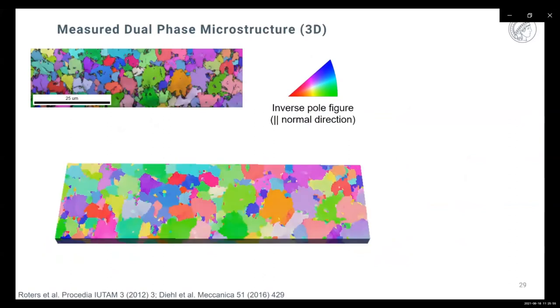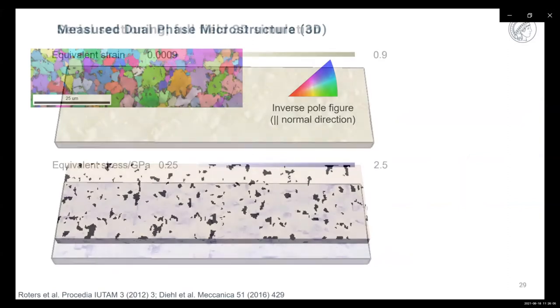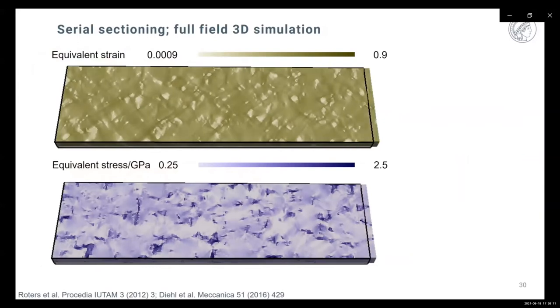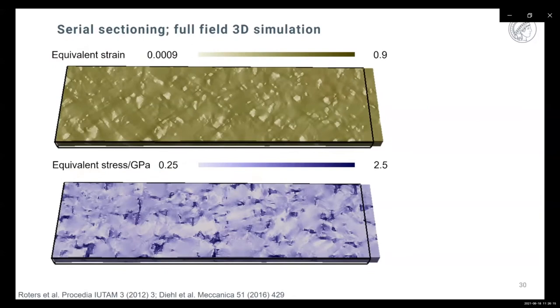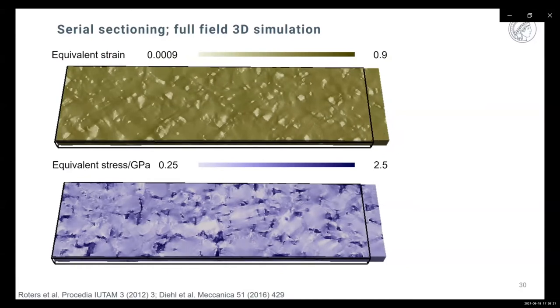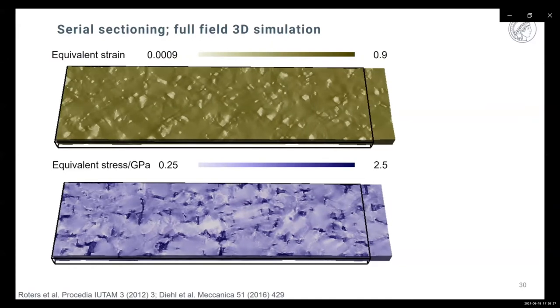A larger portion of material, mapped by EBSD, is rendered digitally and exposed to a computer tensile test using the spectral solver, yielding strain and stress distributions for larger portions of three-dimensional material. This becomes really interesting for predictions of mechanical response and damage initiation. Much of this work was from Martin Diehl, now professor at Leuven in Belgium, with experiments from James Zaefferer's group.